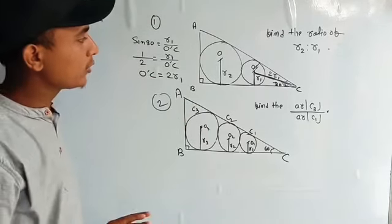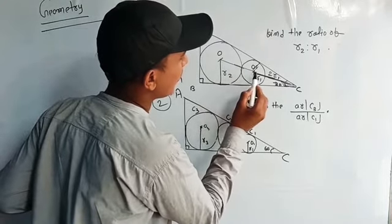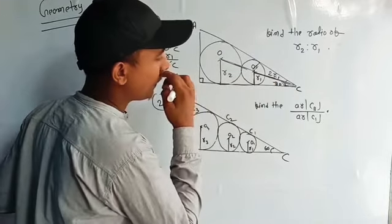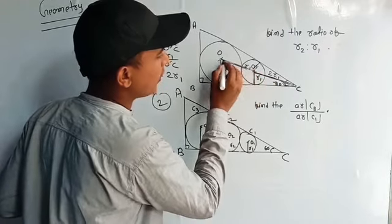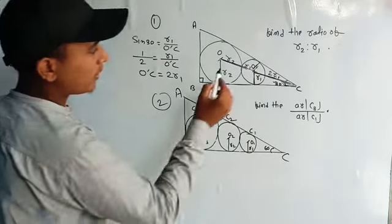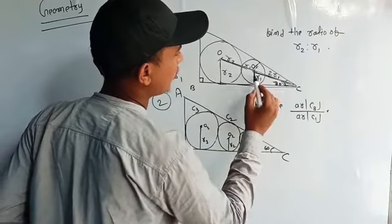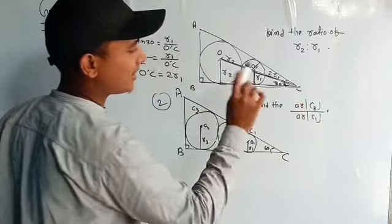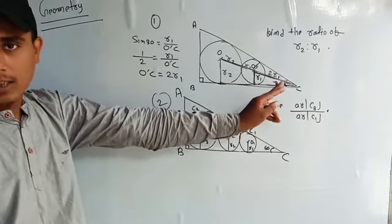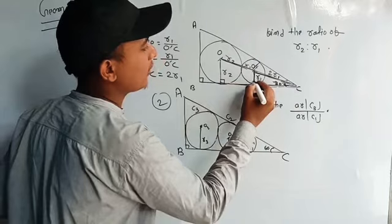If I take this here, then this is O. This is 2R1 and this is R1 and this is R2. So you can see a big triangle and a small triangle.